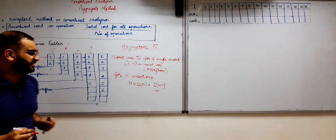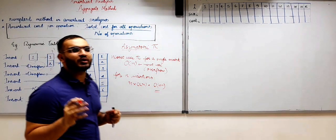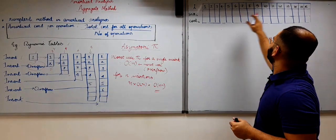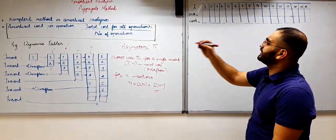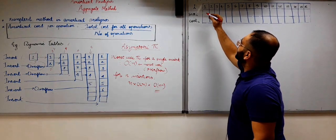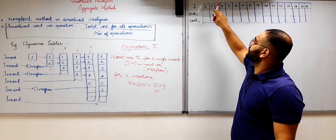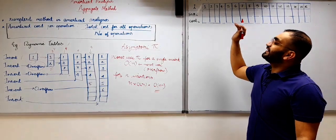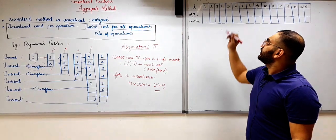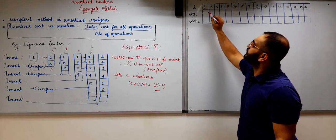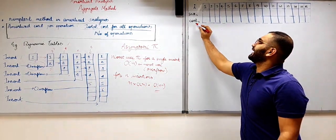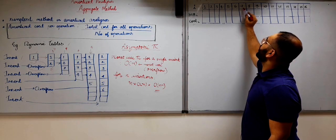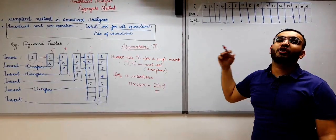But why don't we try to find out the amortized time complexity with the help of the aggregate method for dynamic tables? To check your understanding, I have built a table. Here 'i' denotes the number of insertions, 'size of i' denotes the size of the dynamic table at that particular insertion, and 'cost of i' denotes the cost of the i-th insertion.